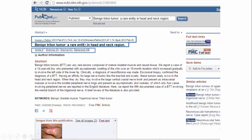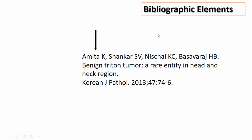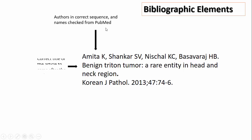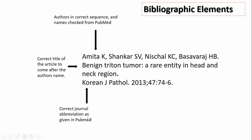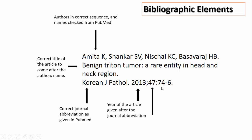So how do you compile these three lines while writing a journal reference in Vancouver style? First, come to the bibliographic elements. Authors in correct sequence have to be written and the names checked from PubMed, followed by the correct title of the article, followed by the correct journal abbreviation as given in PubMed, followed by the year the article was published, followed by the volume, and then followed by the page numbers.